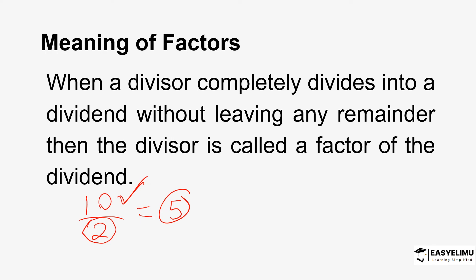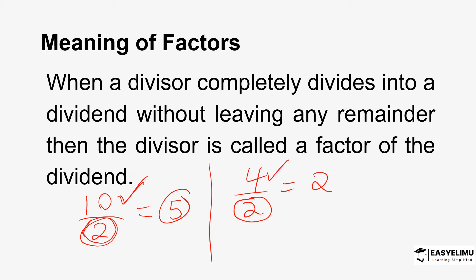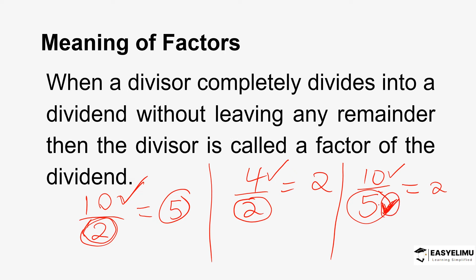So this is considered a factor. For example, 4 divided by 2 is exactly 2, so 2 is a factor of 4 — it divides into 4 completely without leaving any remainder. Look at 10 divided by 5: 5 is the divisor and 10 is the dividend. 10 divided by 5 is 2, so 5 is considered to be a factor of 10 because it divides completely into the dividend.